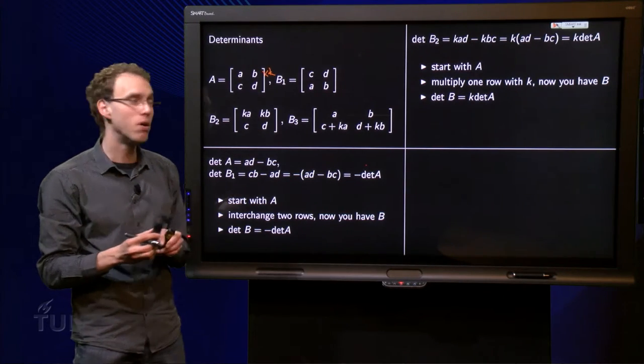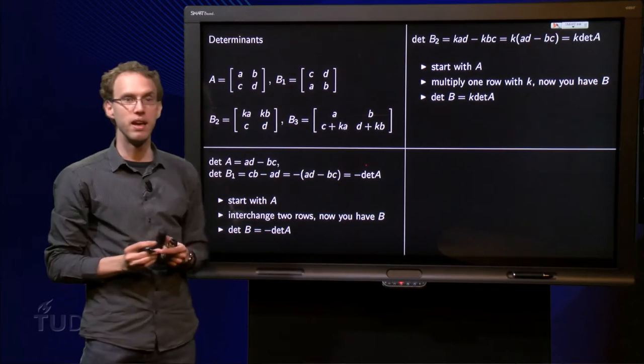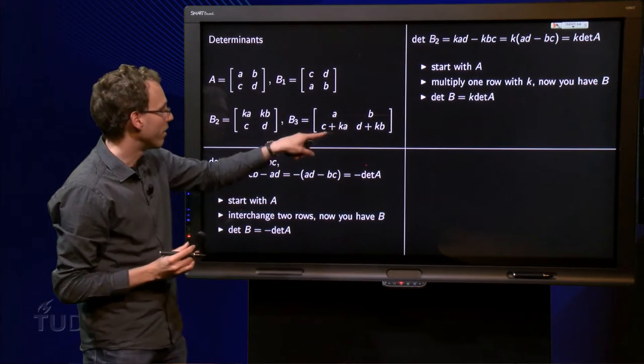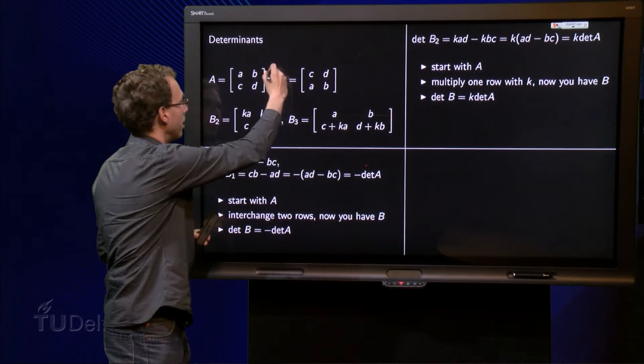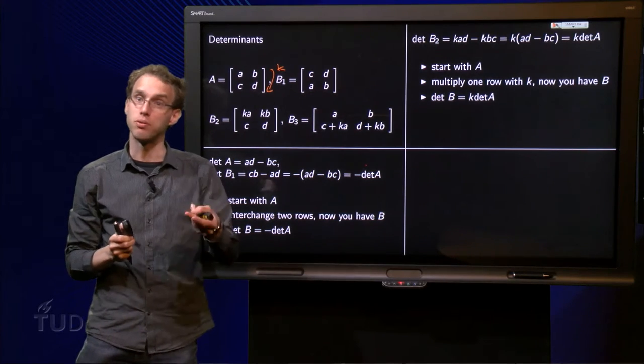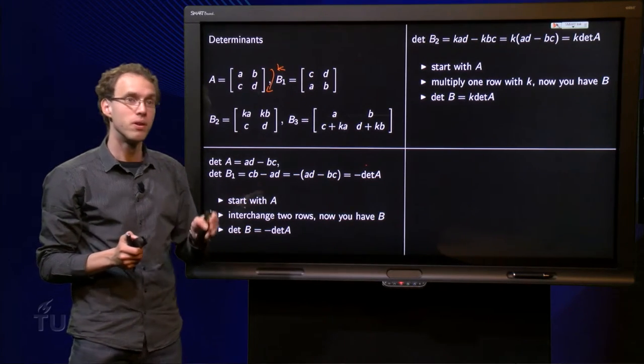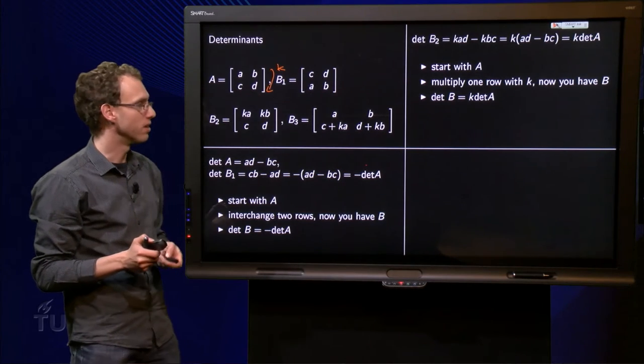So what about the most used operation, which we have in B3 over here, where we added a multiple of a row to another one? To be precise, we added K times the first row to the second row. So the matrix B3 seems to be completely different.